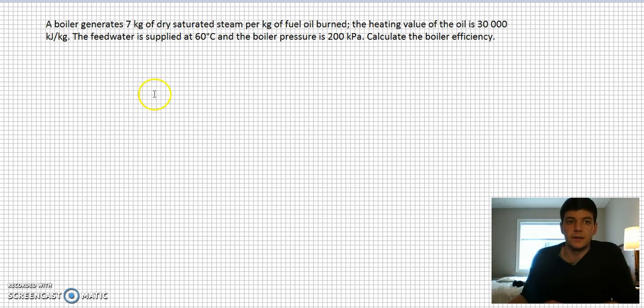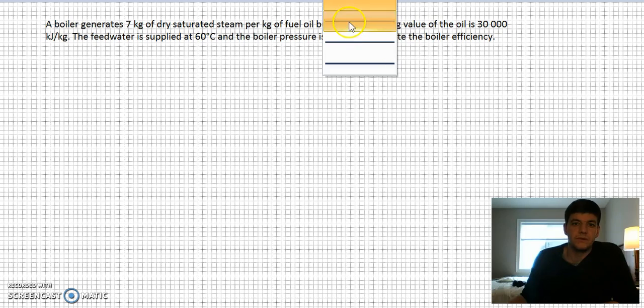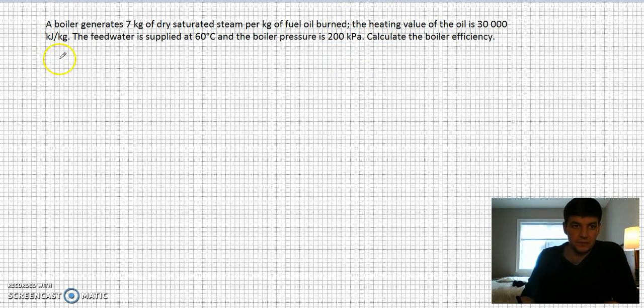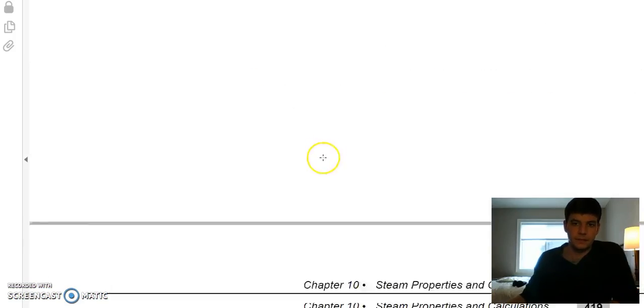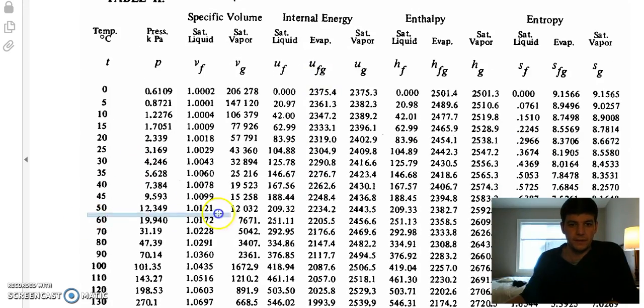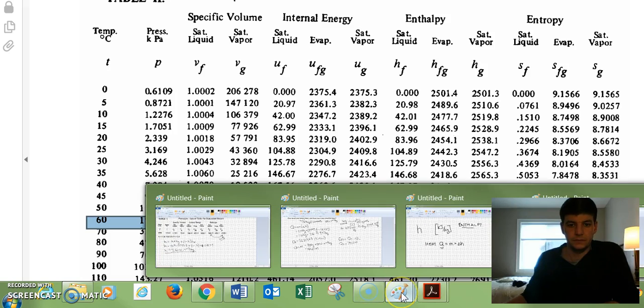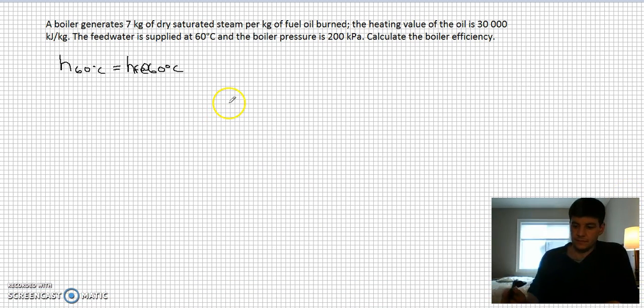We have a few things we need to do. One is we need to figure out some enthalpies. We need the enthalpy of our 60-degree water. We're going to have to go to our temperature table and find our HF at 60 degrees. At 60 degrees, our HF value is 251.13 kilojoules per kilogram.